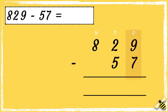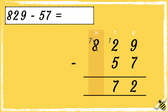First we subtract the ones: nine take away seven equals two. Then we subtract the tens — we can't do two take away five, so we need to exchange from the hundreds column. Now we have 12 take away five, which is seven. Then we subtract the hundreds; we're left with seven hundreds. So the answer is seven hundred and seventy-two.